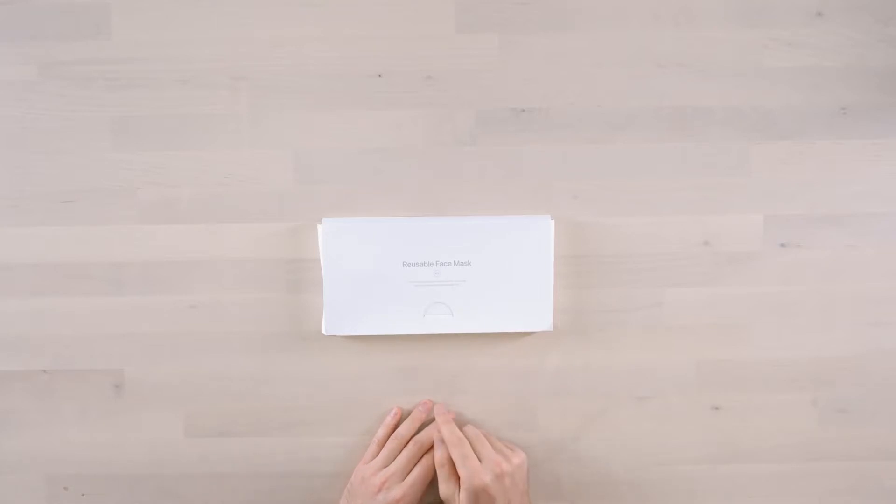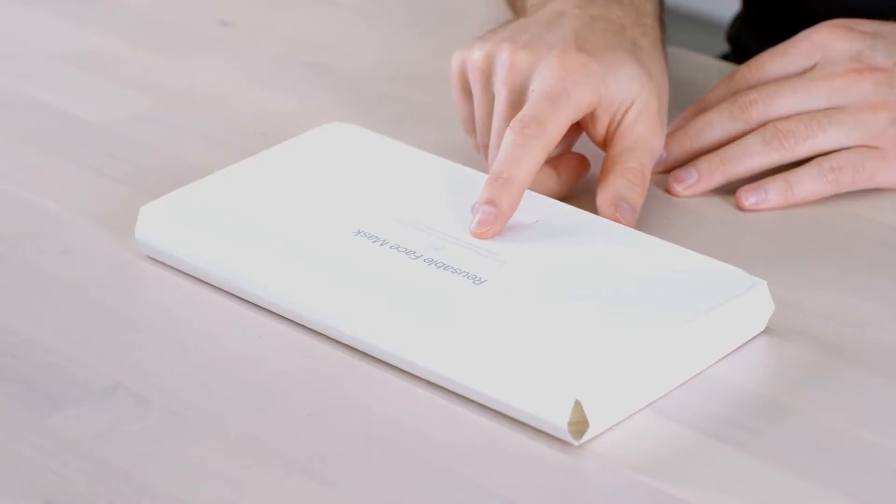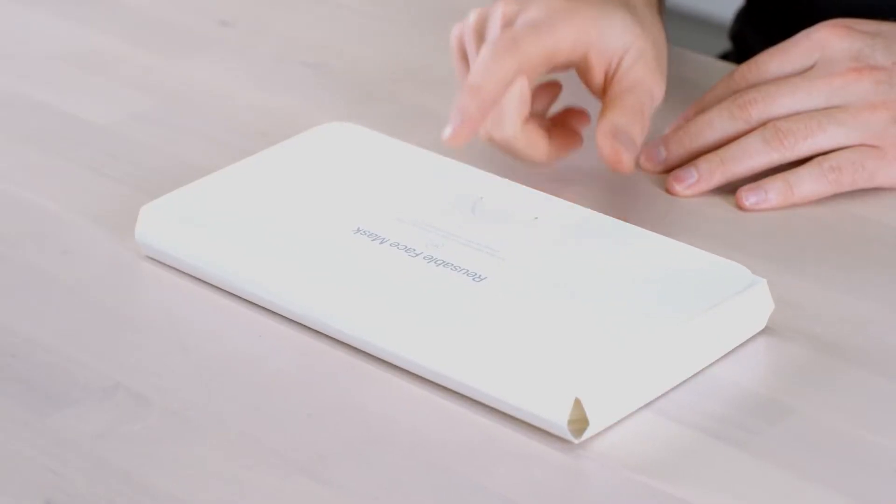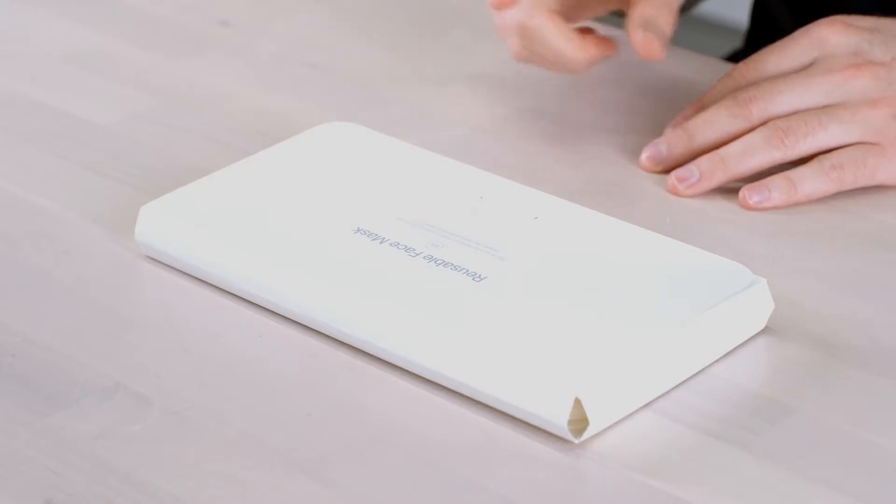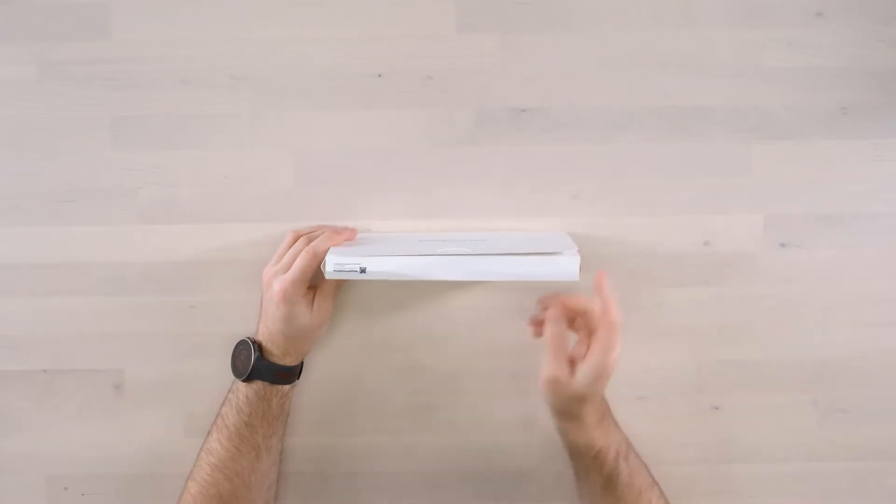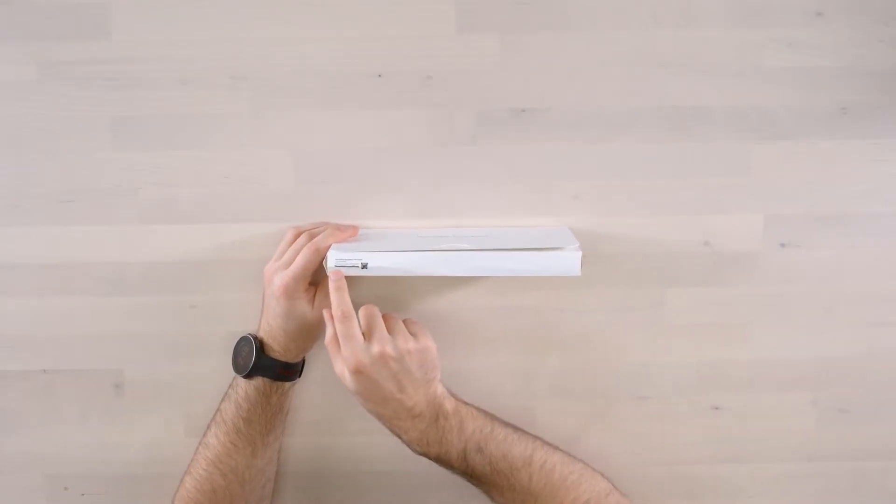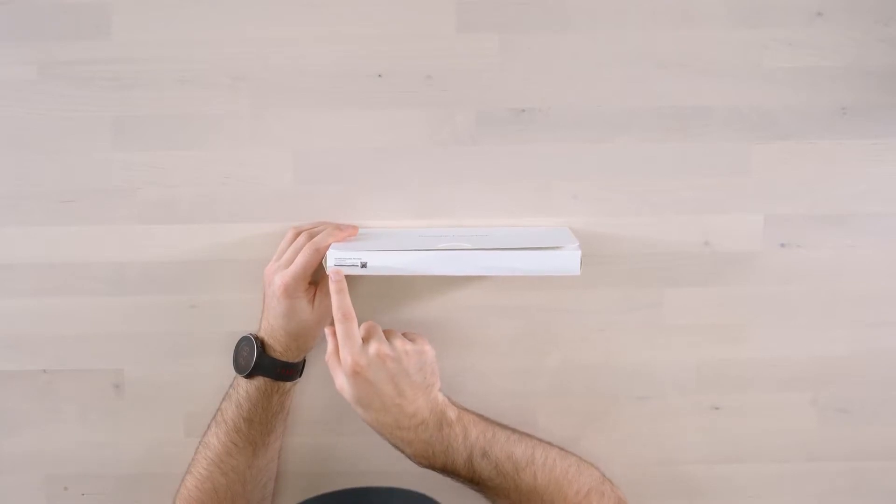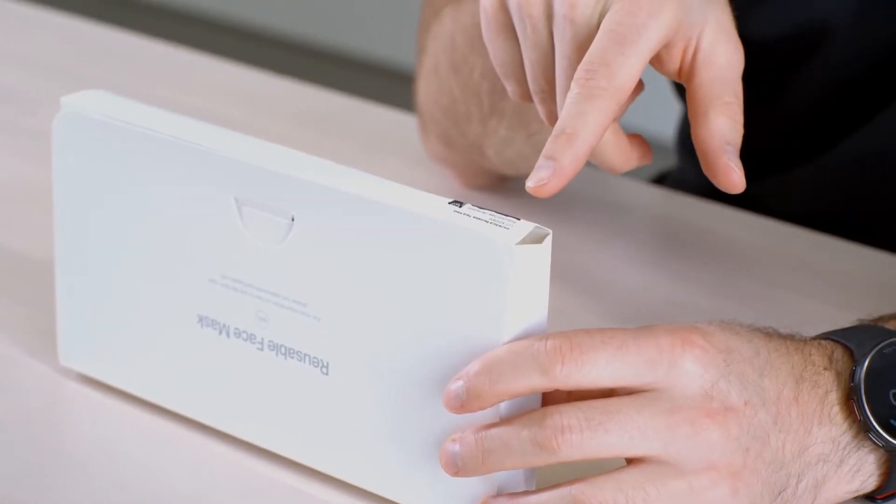This in front of me is the official Apple mask, this is the reusable face mask in medium large. For more information please visit welcomeforward.apple.com. What was crazy to me is on the packaging which is all very Apple-esque as you can tell, we have what looks like a serial number, definitely an item number and a lot number and production date.